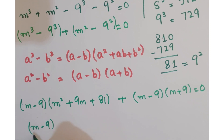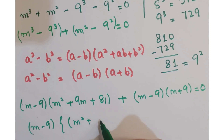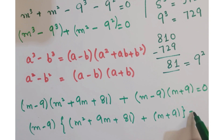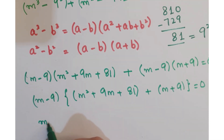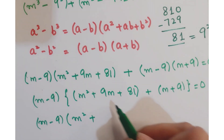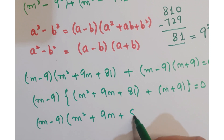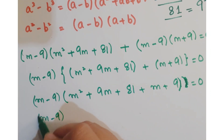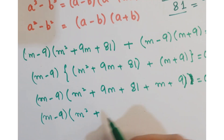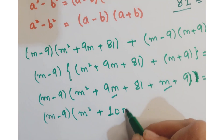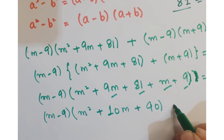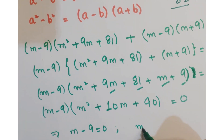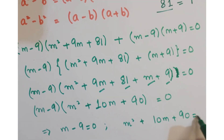Out of these two terms, take out (m − 9) as common. So we are left with m² + 9m + 81 + (m + 9) = 0. Further, you can simplify it as (m − 9)(m² + 10m + 90) = 0. This implies m − 9 = 0 and m² + 10m + 90 = 0.